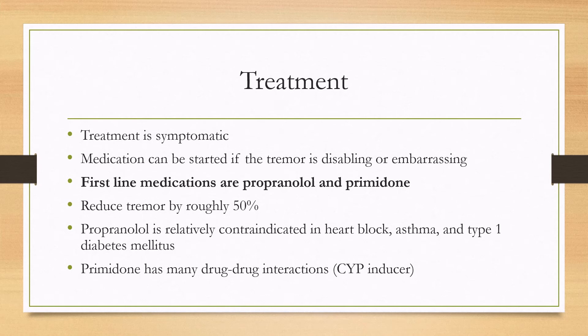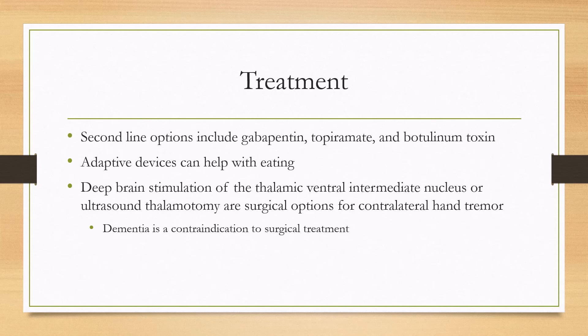Medication is indicated if the tremor is disabling, such as if the patient is having trouble eating, or embarrassing. If the tremor is relatively mild, medications may not be indicated. First-line medications, which can be used as monotherapy or in combination, are propranolol and primidone, and each of these reduces the severity of the tremor by roughly half. Propranolol can be relatively contraindicated in heart block, asthma, and type 1 diabetes, and primidone may be relatively contraindicated if the patient is taking multiple medications because it is a CYP inducer.